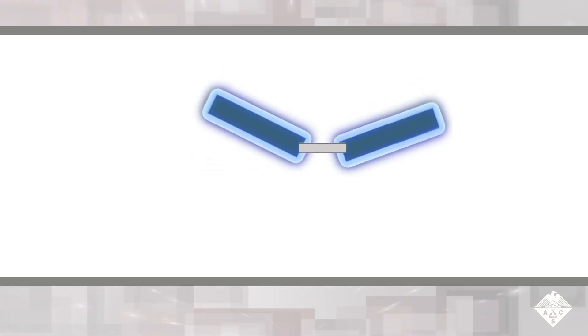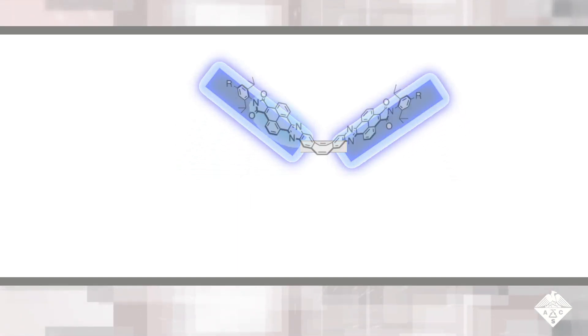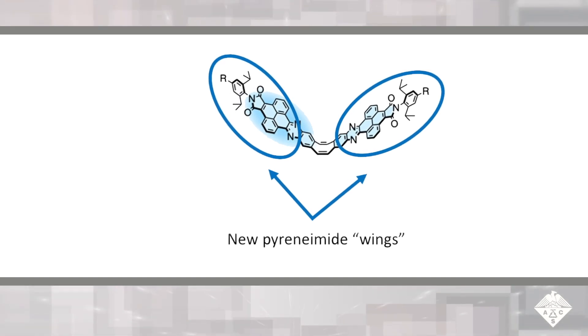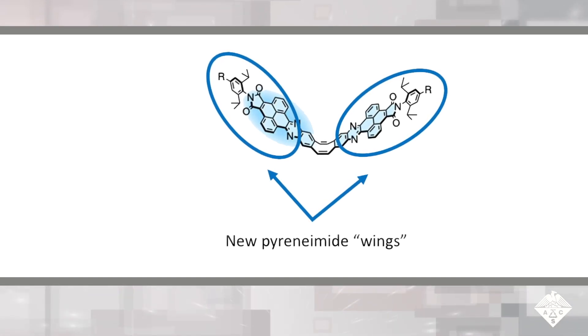Both the original and new flaps have two side structures resembling wings that flatten under pressure and cause the color to change. The researchers replaced the side structures of their earlier flap with pyrenomides, attaching them to opposite sides of the same flexible joint.